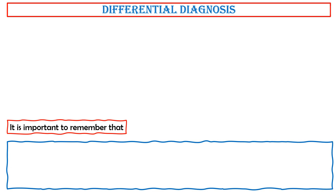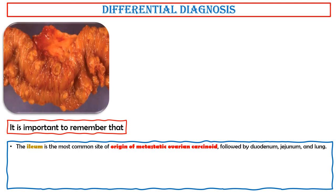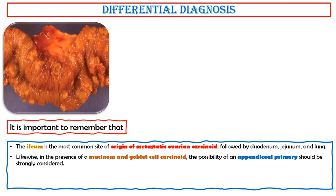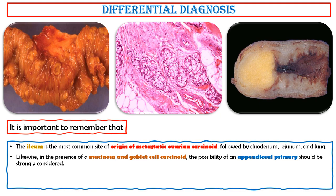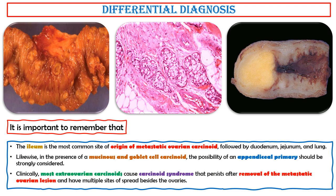The ileum is the most common site of origin of metastatic ovarian carcinoid, followed by duodenum, jejunum, and lung. In the presence of a mucinous and goblet cell carcinoid, the possibility of an appendiceal primary should be strongly considered. Clinically, most extra-ovarian carcinoids cause carcinoid syndrome that persists after removal of the metastatic ovarian lesion and have multiple sites of spread besides the ovaries.